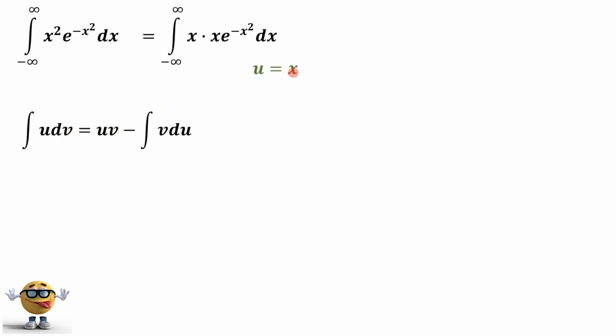We're going to set u equal to x, and if we do that, then du dx is equal to 1. Now dv is going to be everything else, because that's what we have here. If u is x, then dv has to be everything else right here.